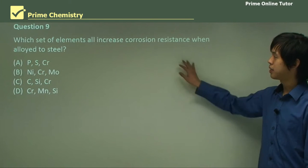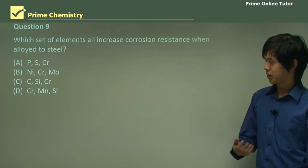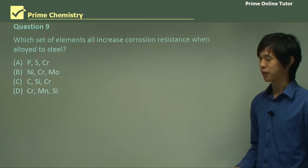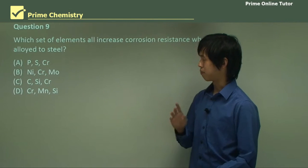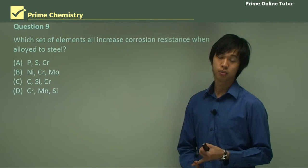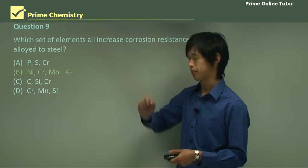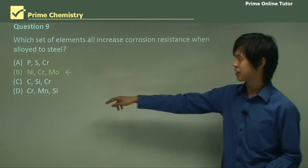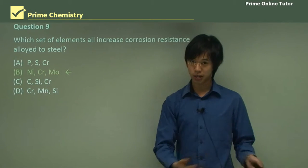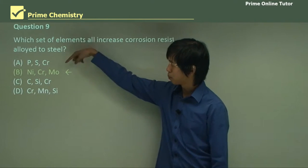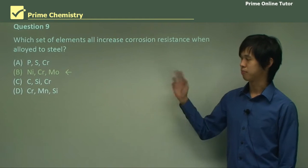Question: Which set of elements all increase corrosion resistance when alloyed to steel? We look for chromium — all options have it, so that doesn't help eliminate anything. We also look for nickel or molybdenum, since molybdenum increases corrosion resistance. The only option containing all three — chromium, nickel, and molybdenum — is B. Silicon only increases hardness, carbon only increases some properties like strength, manganese wasn't discussed, and phosphorus and sulfur likely make things worse. So B is the correct answer.